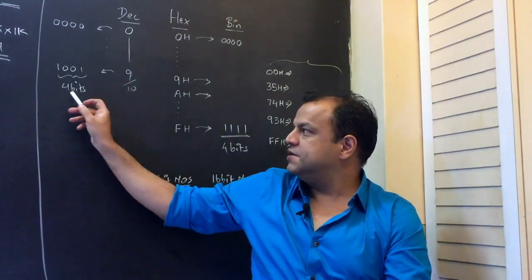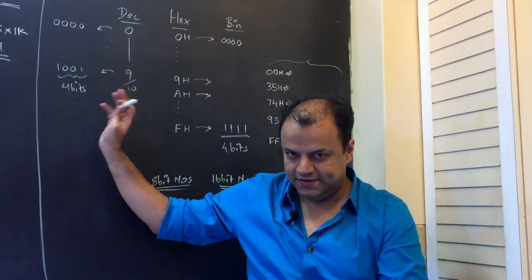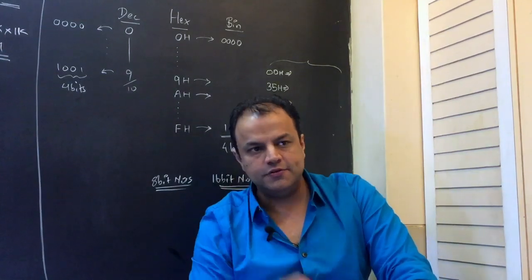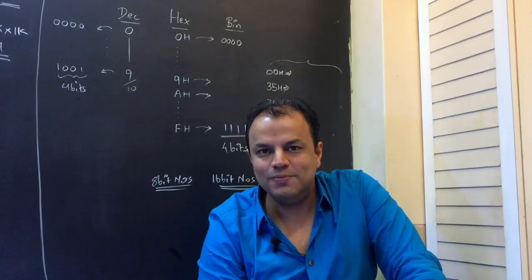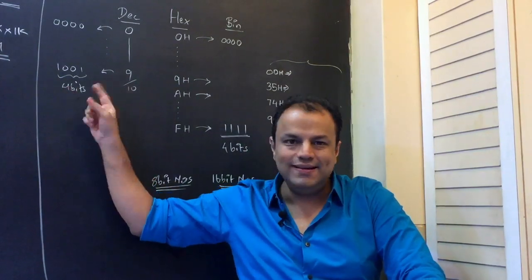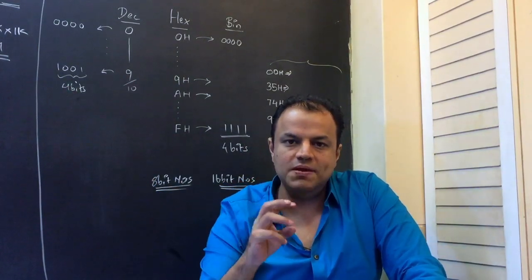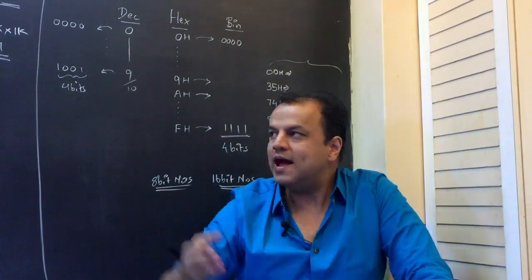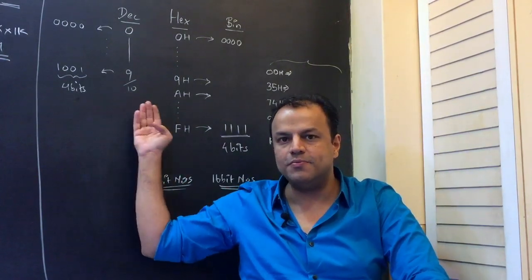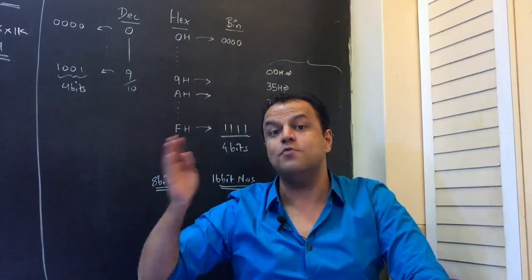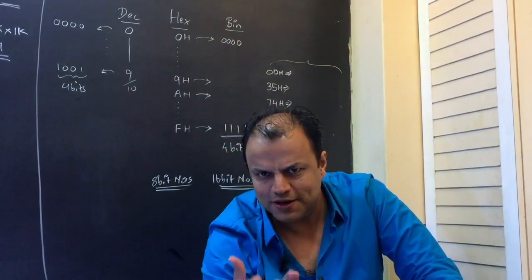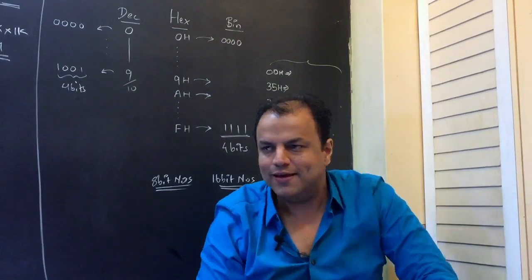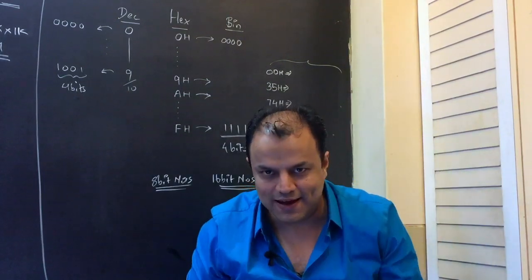To represent one digit, I use four bits. Now the problem is in four bits you can get 16 combinations, but you have used only 10 combinations. So that means there are 6 combinations which are forbidden — they don't have an equivalent representation in the decimal form.